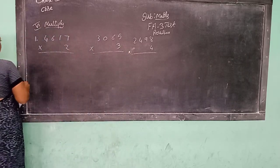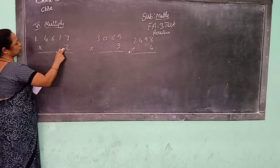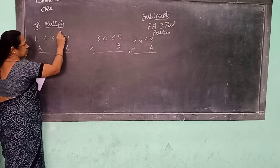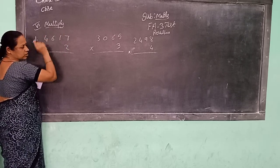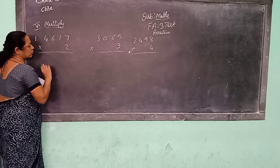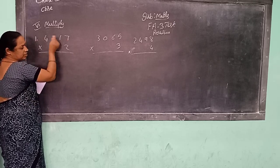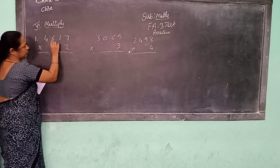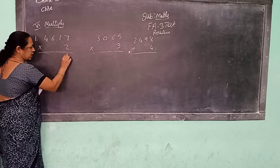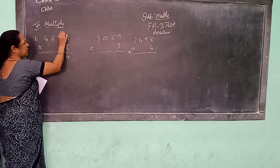Okay children. So from 2 we are going to write over and over the list. All the other ones you can see are going to write from 2. First, mark right from the right side. 2, 7's are 14. Right 4, 1 carry.